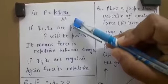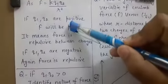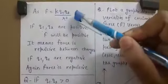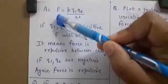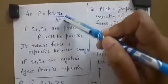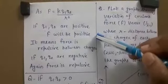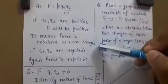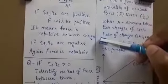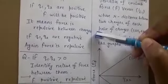On the basis of this formula, we will discuss conceptual points. If Q1 and Q2 are both positive, then what information can you get about force F? When both charges are multiplied, the result will be positive, so force F will be positive. The significance of positive force is that there is a force of repulsion between the charges — recalling the concept that like charges repel each other.